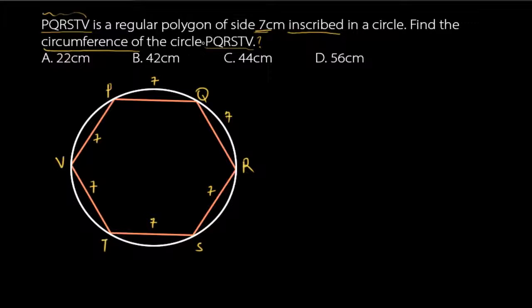We need to find the circumference of the circle. The formula for the circumference of a circle is C equals 2πR, where 2 is a constant, π is 22 over 7. To find the circumference, we first need to find the radius. It will become clearer when we dissect this polygon by joining all the vertices.